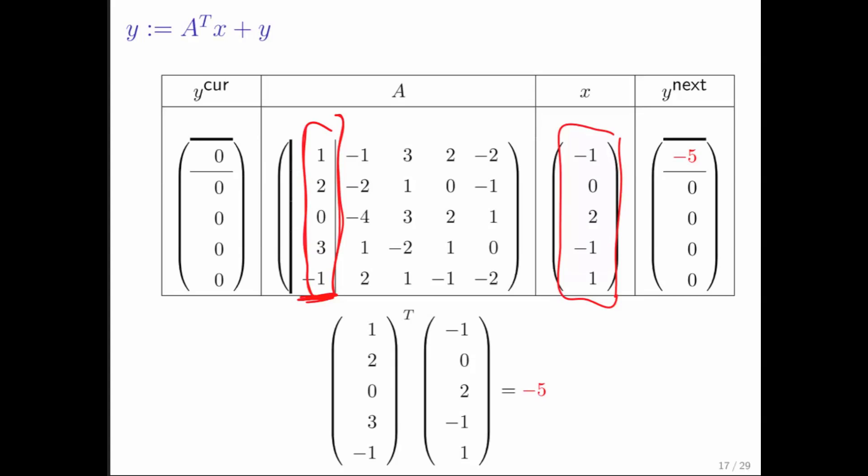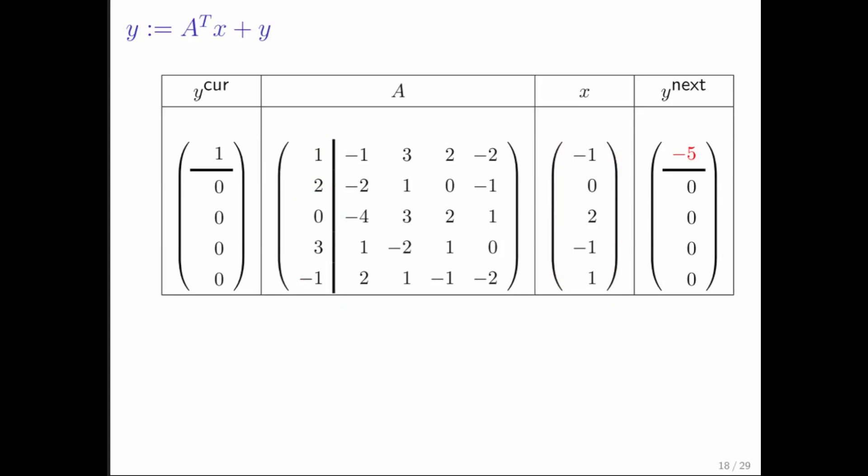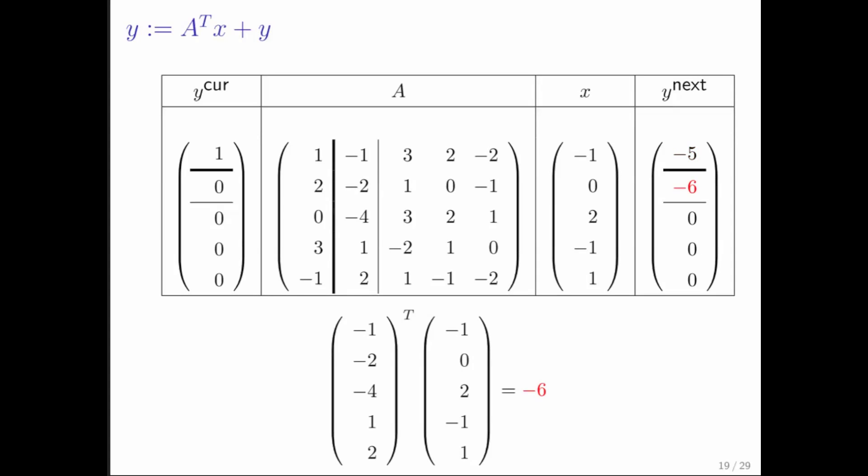And why not just doing the dot product with that column of matrix A? Then you move on and you do the same thing with the next column of A, which would have been the second row of A transpose and so forth.